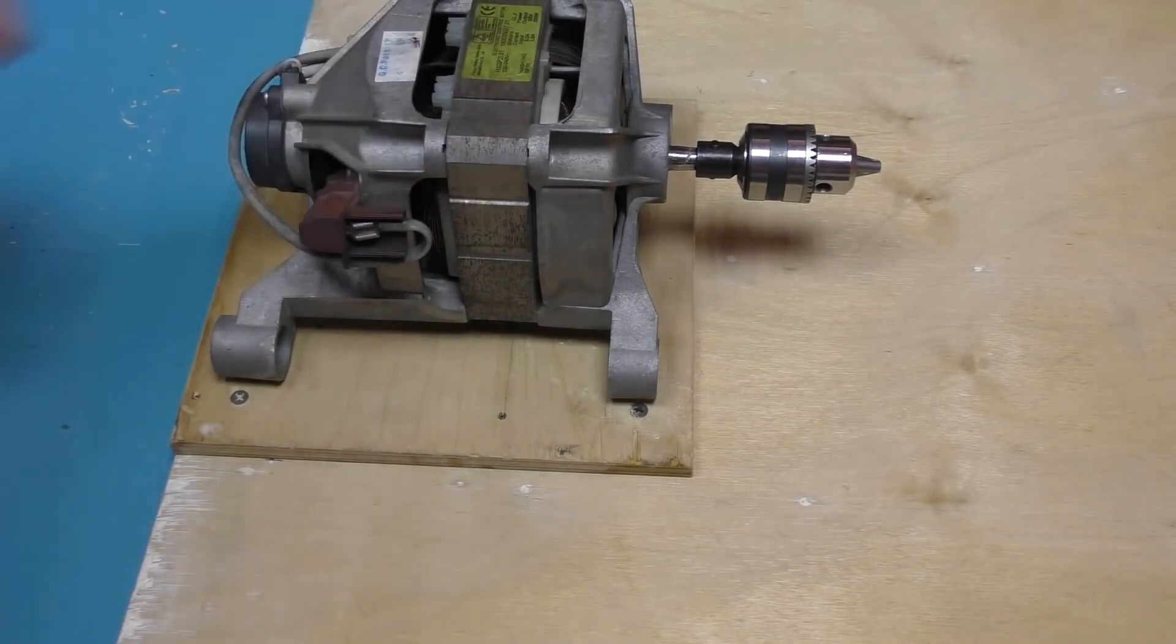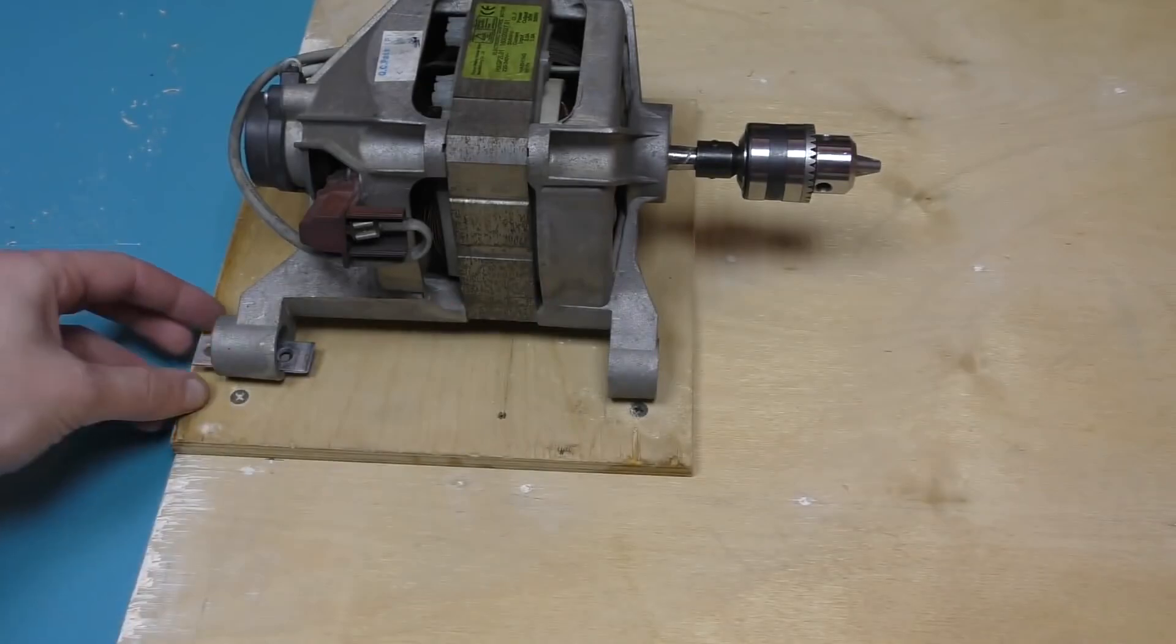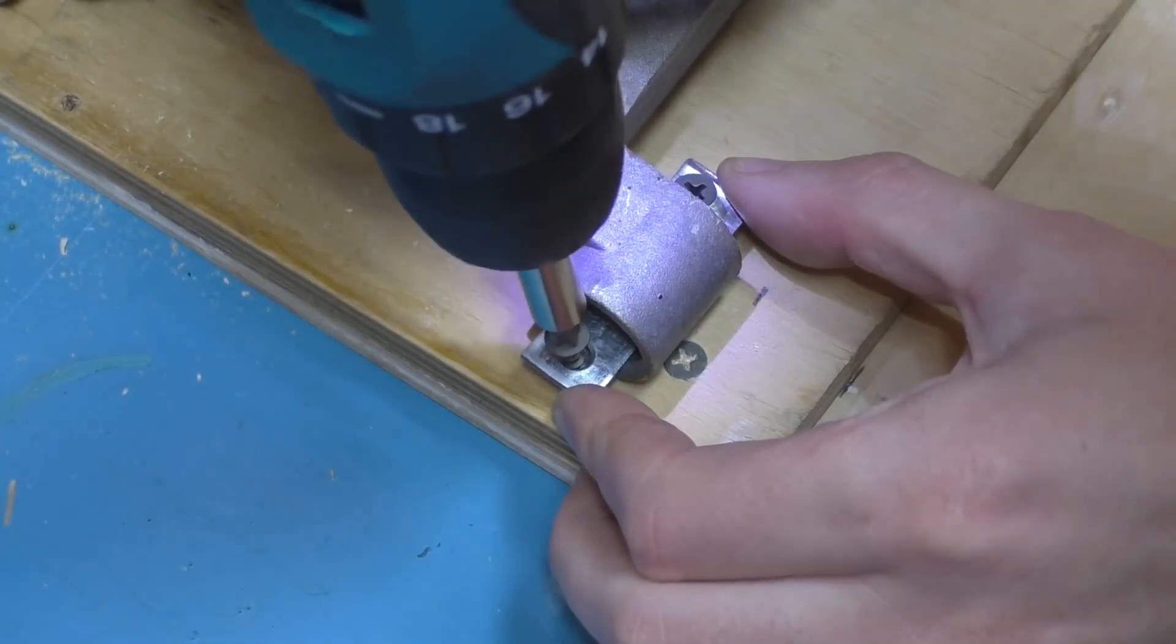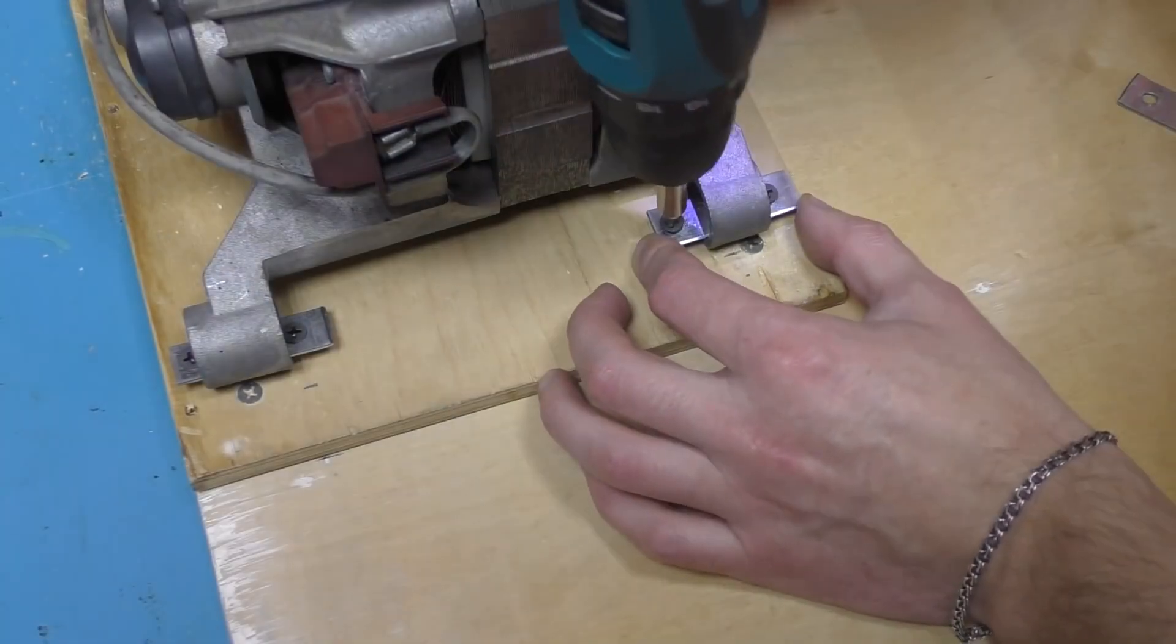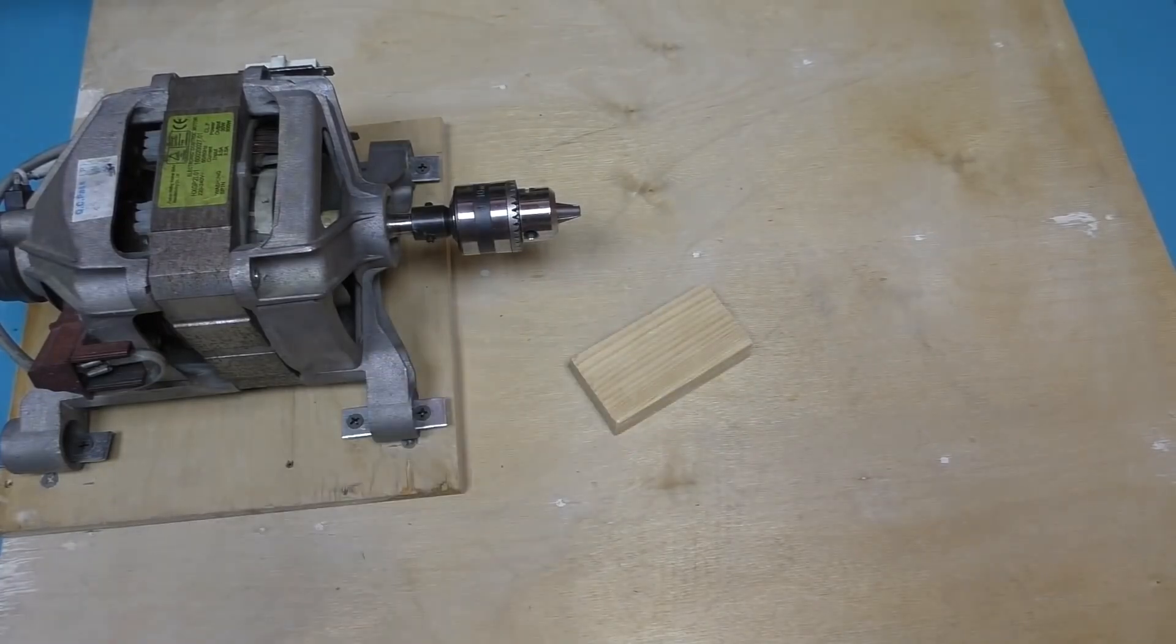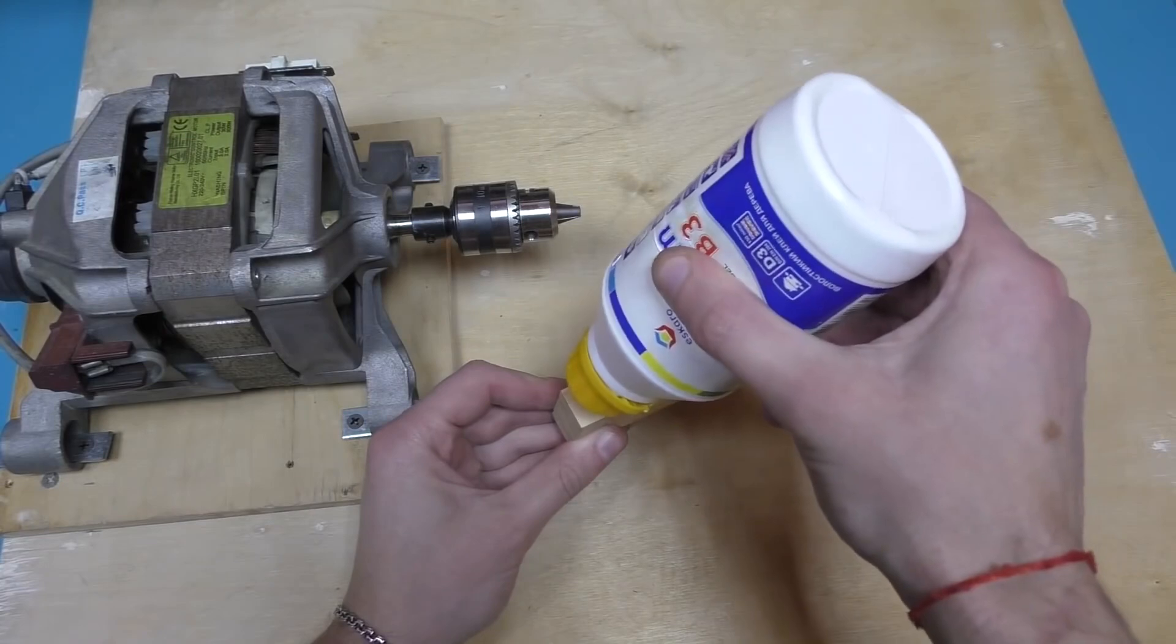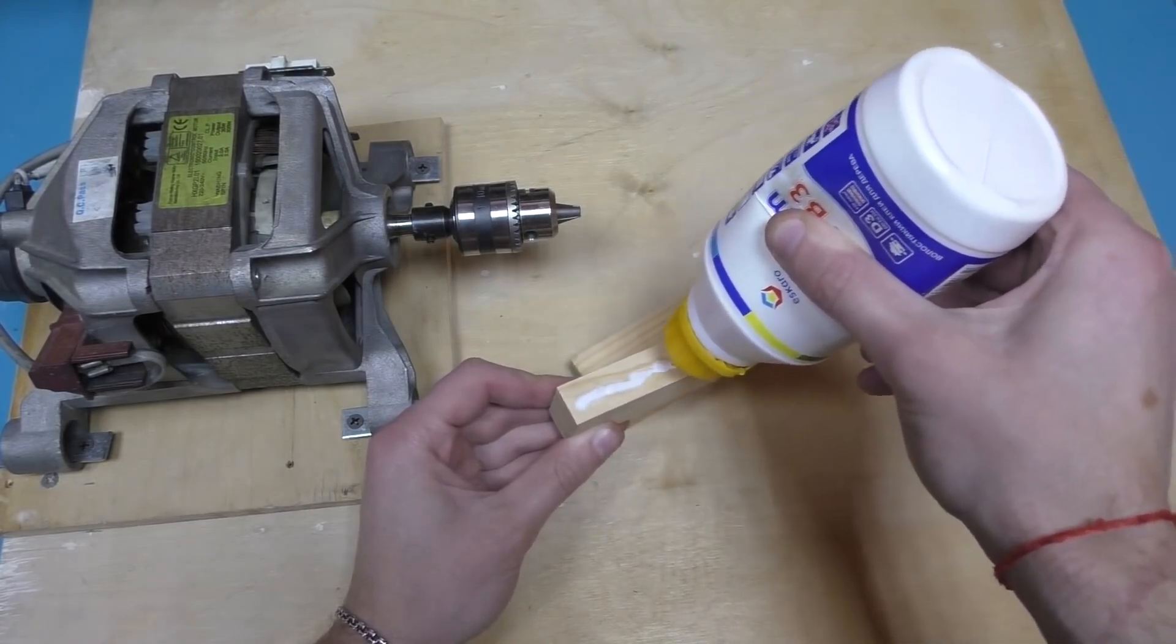Now, place the motor on this piece and secure it using four plates with holes. Now, we need several pieces of wood measuring 10 by 4 with a thickness of 2 centimeters, which need to be attached to each other using glue and screws.